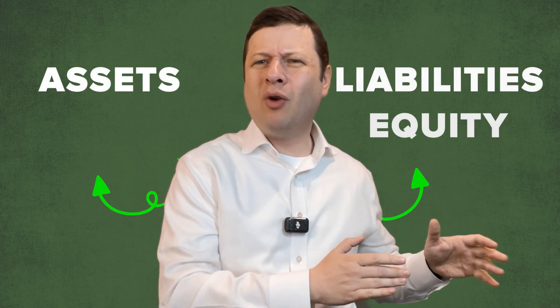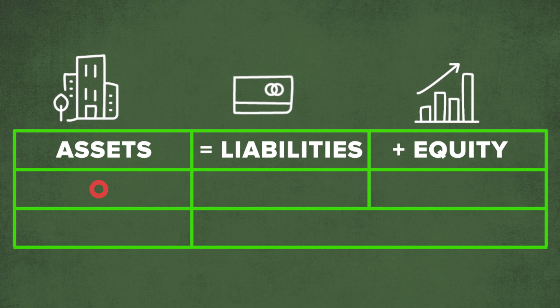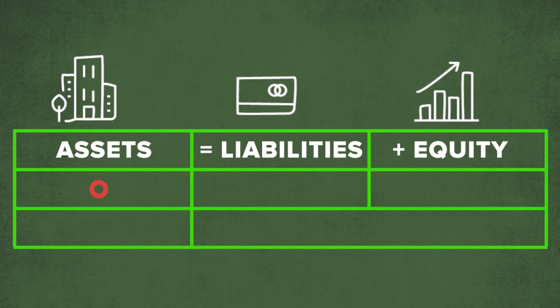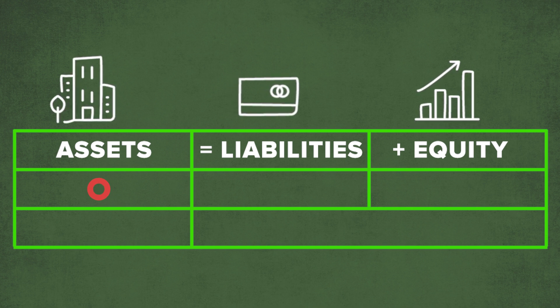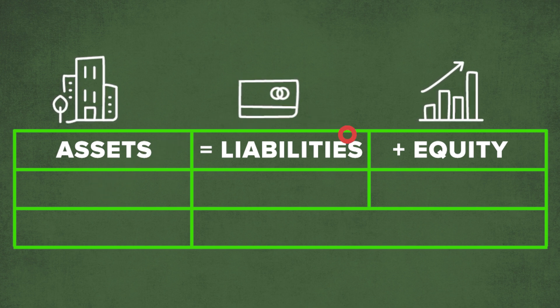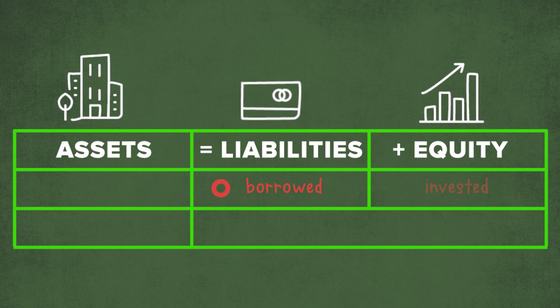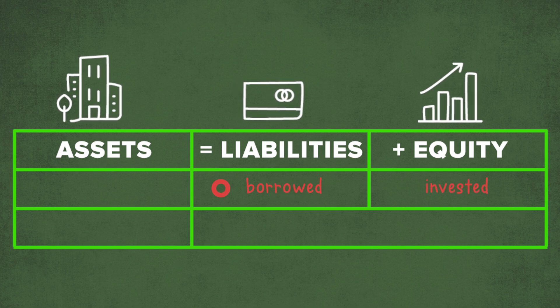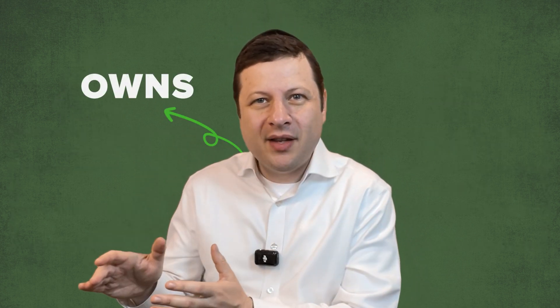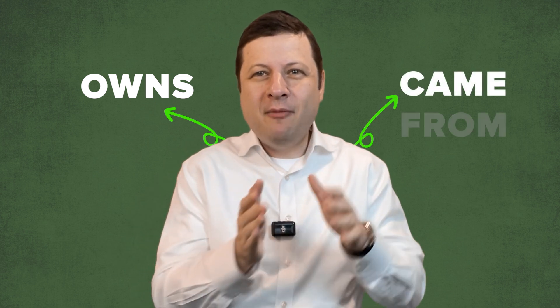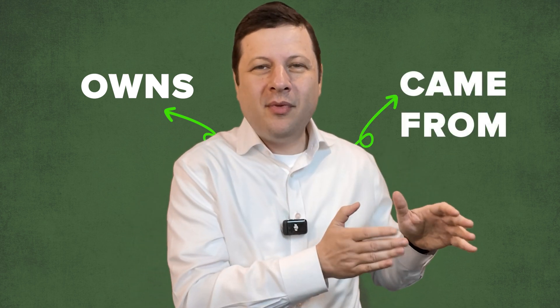Why are assets on the left and liabilities and equity on the right? Think of it this way: everything you own — assets — which is on the left side, came from somewhere on the right side. It's either borrowed or invested, like liabilities or equity. Own on the left, came from the right.